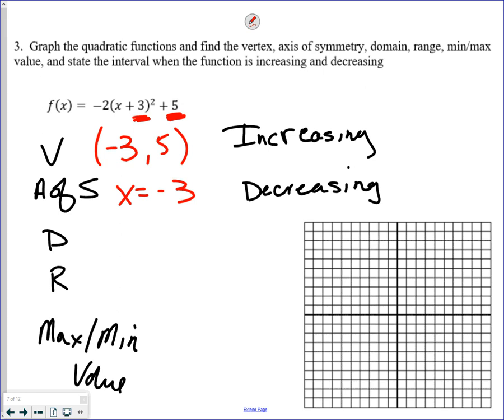So negative 3, 5. It's a downward parabola. So over 1, down 2. Over 2, down 8. Again, those of you that don't use the counting method and just use x, y charts, by all means, that's fine.